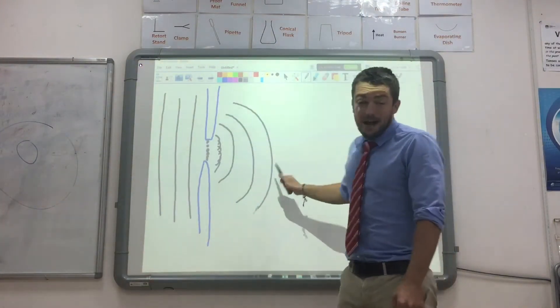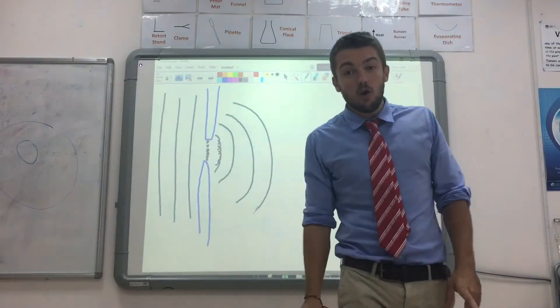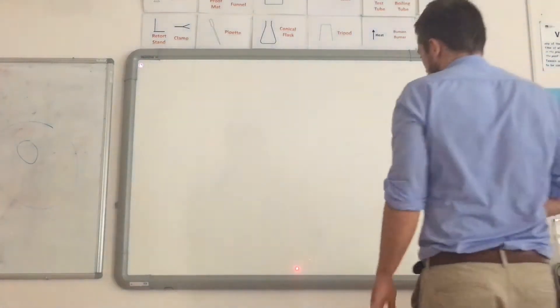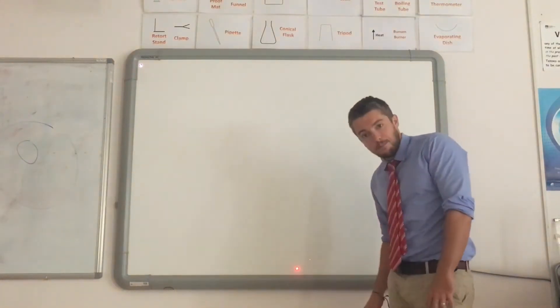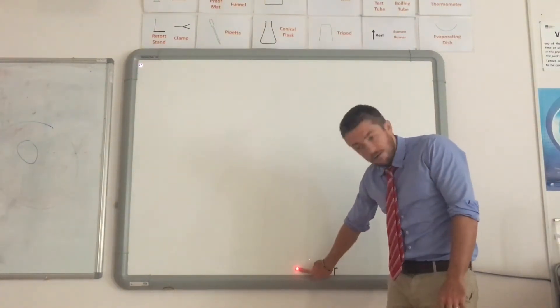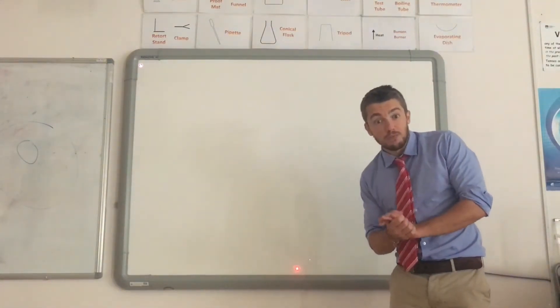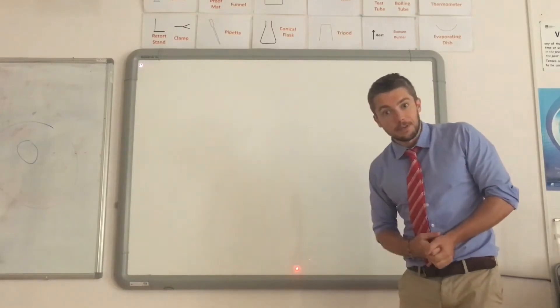Now actually, the wave patterns are a little bit more complicated than this, and I'm going to show you how they look using a laser. I've turned the lights off so you can see better. Here is a point from a laser being shone at the board. What I'm going to do now is put a single slit in front of that laser and see what happens to the pattern.